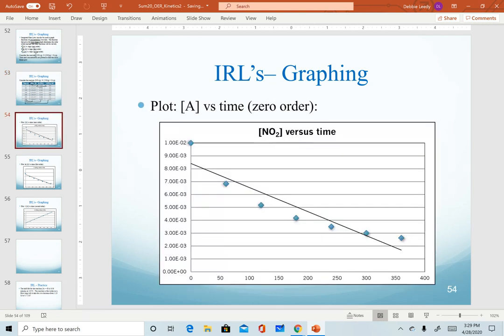So our first graph. We have here plotted concentration versus time. Notice that it's downward sloping, but our dots do not follow a straight line. So I think it's safe to say that this is not zero order.